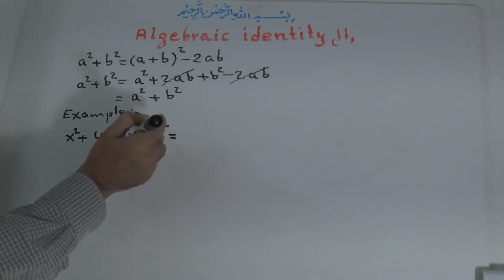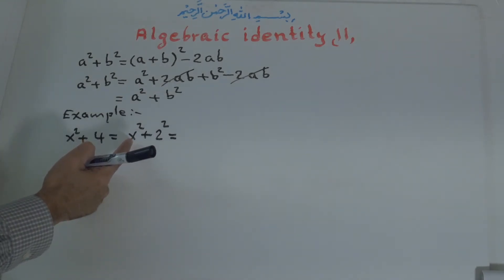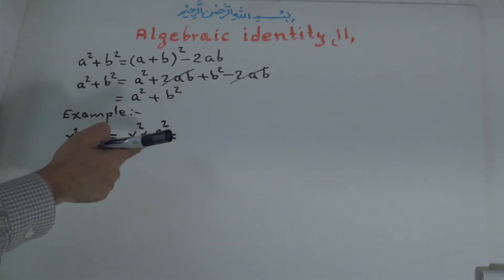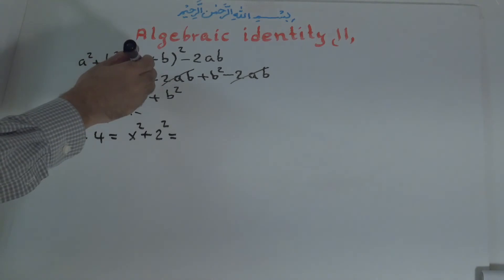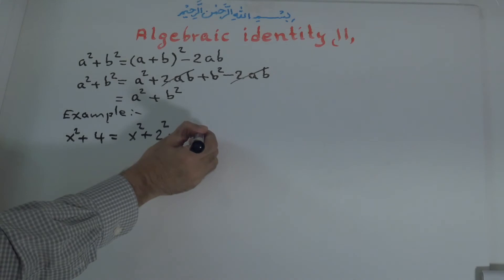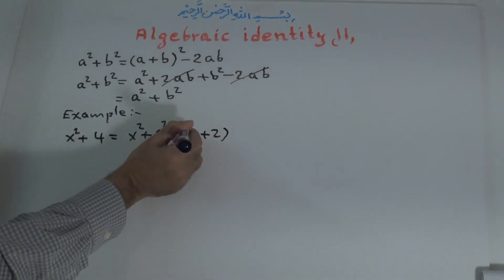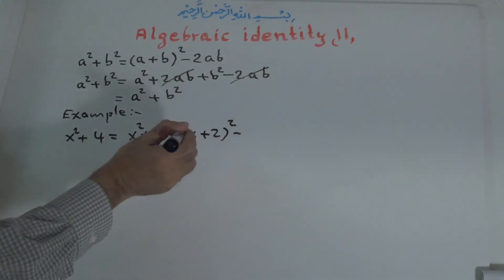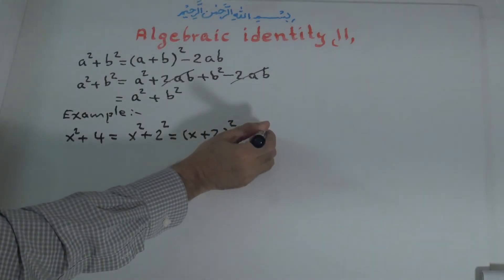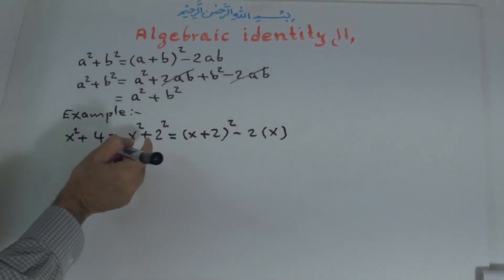Now this is equal to, according to the identity — the same shape of this one — x to the power of 2 and b to the power of 2. So what is this? It is a plus b to the power of 2. What is a? a is x. What is b? b is 2.